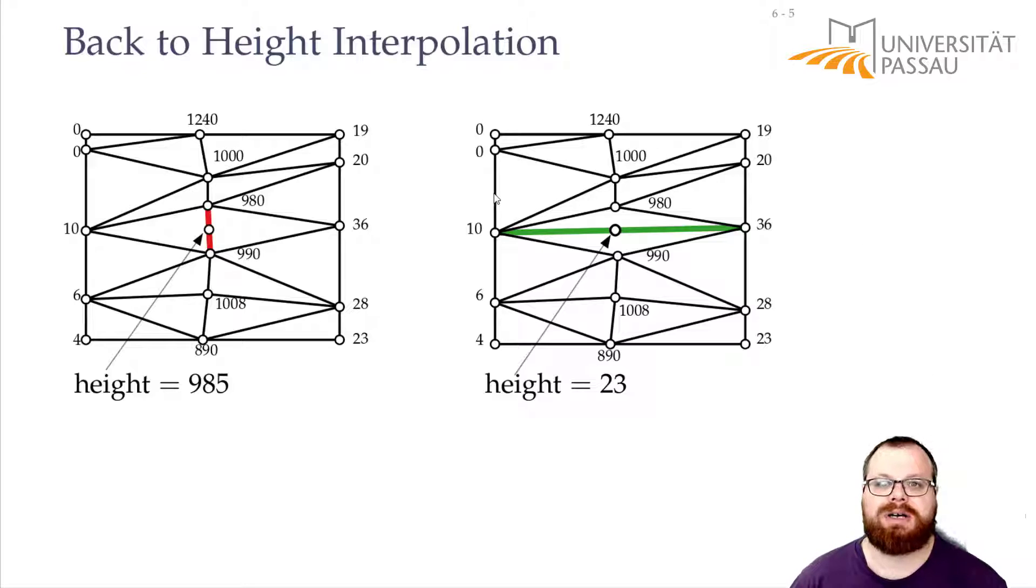So we want to find a triangulation where the points we get from interpolation are as good as possible, or as likely as possible to be true. And for that, if you look at these two triangles that we have here, and these two triangles that we have here, these ones are very skinny, they are very flat. And this is much closer to a regular triangle. And a regular triangle is much more likely to give us a correct interpolation. So what we want to do is we want to avoid those skinny triangles that we have here.